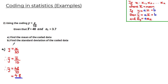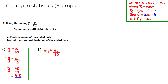The next part asks us to find the standard deviation of the coded data. Given the coding equation y = x / 10, it follows that σy = σx / 10. Substituting σx = 3.7, we get σy = 3.7 / 10 = 0.37.